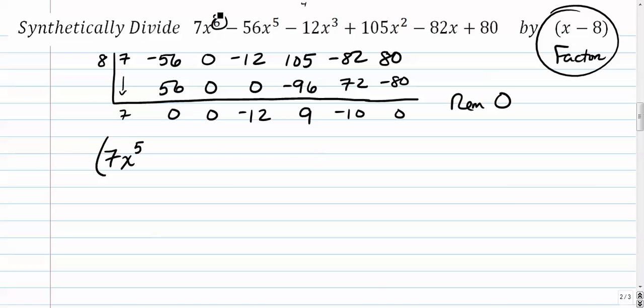Because remember, if we start with a 6th degree polynomial, then we have to reduce that by 1 plus 0x to the 4th plus 0x to the 3rd minus 12x squared plus 9x minus 10.